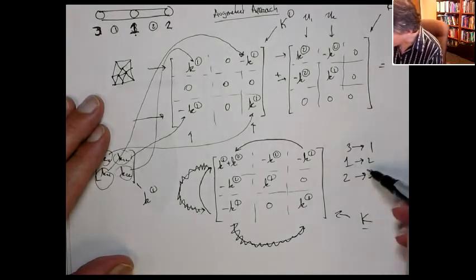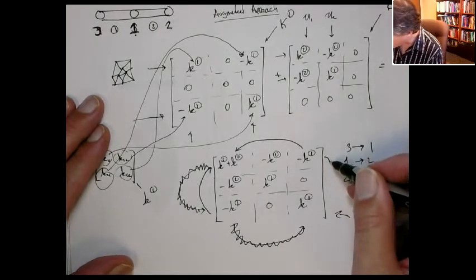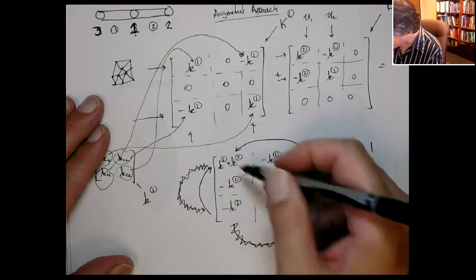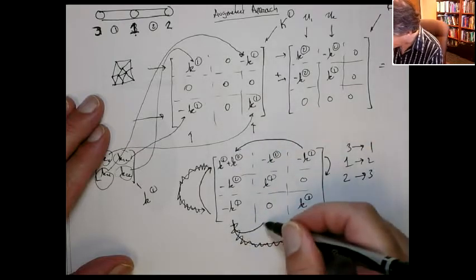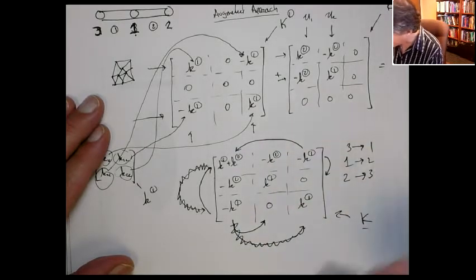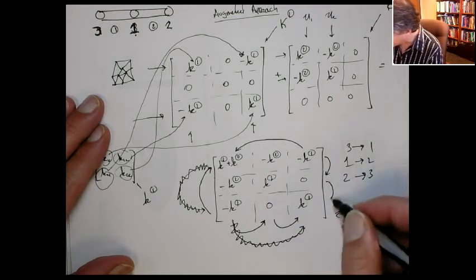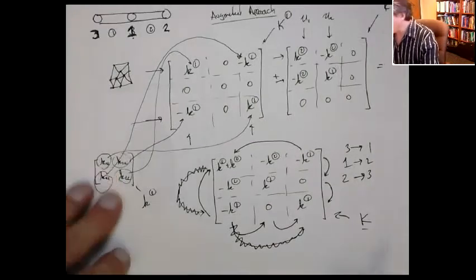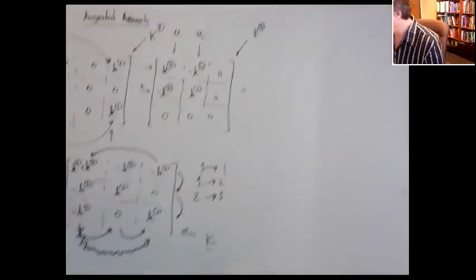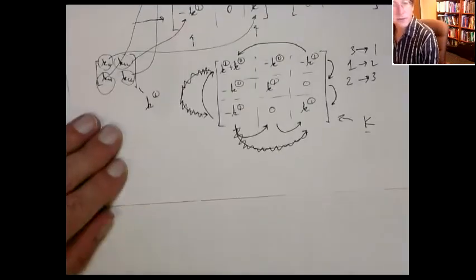And then 1 goes to 2. So we're going to take row 1, put it here, and then put column 1 and put it here. And then finally, 2 goes to 3. So this goes here, and this goes here. Now, if you renumber it in that order, and it looks a little confusing, but let's see if I can get these both on the same page.